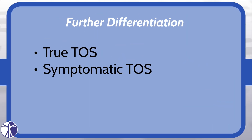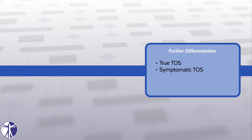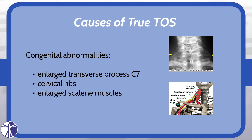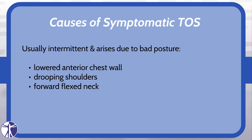Furthermore, the literature differentiates between true TOS and symptomatic TOS. The cause of true TOS is due to congenital abnormalities like an enlarged transverse process at C7, cervical ribs, or the enlargement of the scalene muscles. Symptomatic TOS is usually intermittent and occurs with certain arm and neck positions, and often arises due to bad posture like lowering of the anterior chest wall, drooping shoulders, or forward flexed neck.